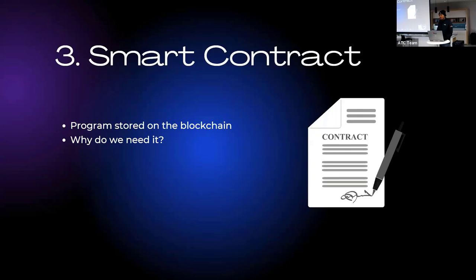Some current drawbacks of smart contracts: first, it's expensive — it costs money to change data and execute smart contracts because each interaction on the Ethereum blockchain is known as a transaction, and you pay a small fee to incentivize miners to add your transaction to the blockchain. Second, it takes time — around 15 seconds to mine or add a transaction onto the blockchain. Third, if you're not careful, you can introduce a bug that hackers can exploit, such as the DAO hack where an attacker drained more than 3.6 million Ether.